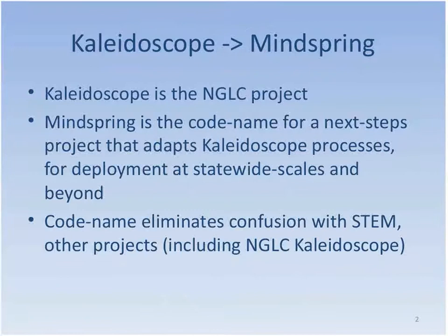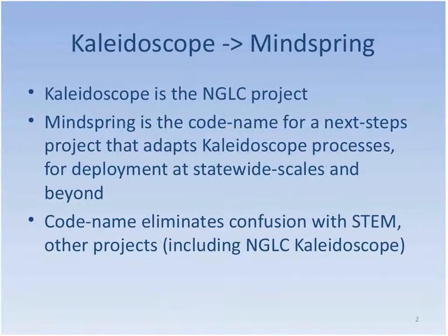I want to talk today about two projects: Kaleidoscope and MindSpring. Your slide should show a bullet point slide titled 'Kaleidoscope → MindSpring.' Kaleidoscope and MindSpring stem from the same set of intellectual property and ideas. Kaleidoscope was funded by Next Generation Learning Challenges — the Gates and Hewlett funded curriculum reform initiative. It was one of the first projects funded in Wave 1. Kaleidoscope has completed its initial round of funding, and the results were so compelling that a next steps initiative was conceived, codenamed MindSpring.